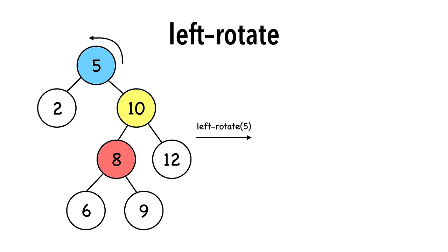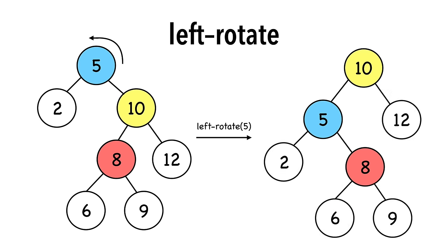5's right child 10, the yellow node, becomes its parent. 10's left child 8, the red node, becomes 5's new right child. Here's the tree after the rotation is complete.